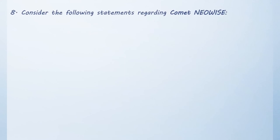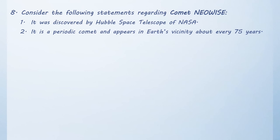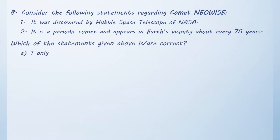Moving on: consider the following statements regarding Comet NEOWISE. Statement 1: It was discovered by the Hubble Space Telescope of NASA. Statement 2: It is a periodic comet and appears in Earth's vicinity about every 75 years. Which of the statements given above are correct? Option A: 1 only. Option B: 2 only. Option C: Both 1 and 2. Option D: Neither 1 nor 2.